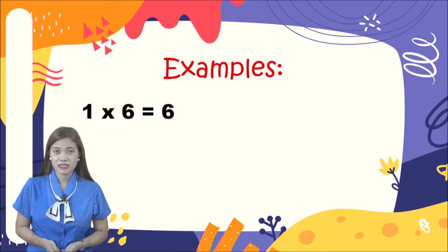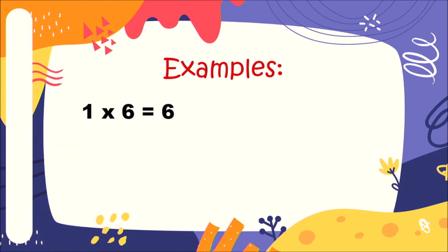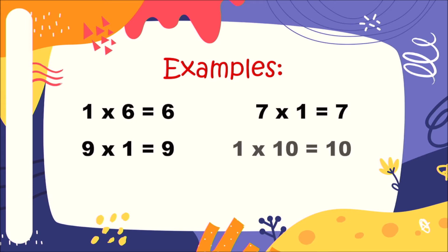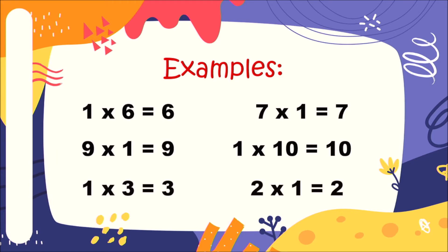One times six is equal to six. Seven times one is equal to seven. Nine times one is equal to nine. One times ten is equal to ten. One times three is equal to three. Two times one is equal to two. Remember, Grade 3: any number that we multiply by one, the number will remain the same.